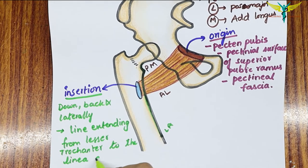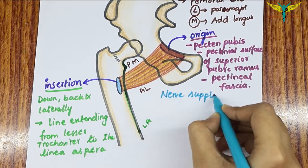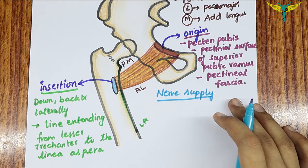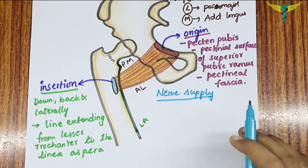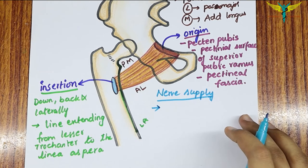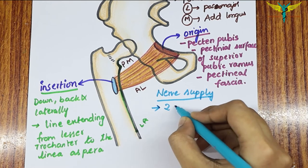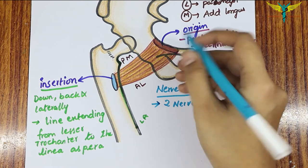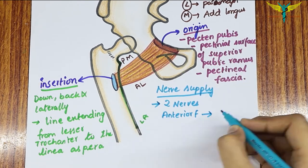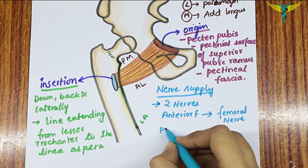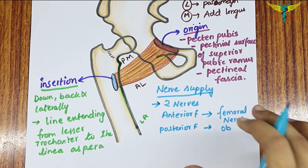For the nerve supply, you should remember that all muscles of the medial compartment of the thigh are supplied by the obturator nerve. However, the pectineus is an exception — it is supplied by two nerves: the anterior fibers are supplied by the femoral nerve, and the posterior fibers are supplied by the obturator nerve, specifically its anterior division.